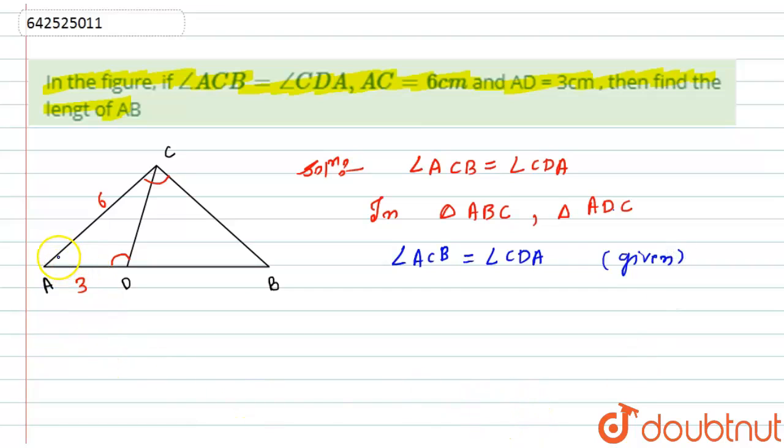Now second thing, if we look at the figure, this angle A is common in both of the triangles. So can I say that the angle CAD is equals to angle CAB?